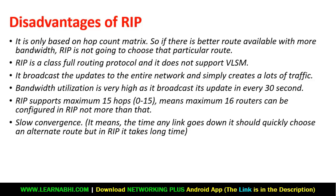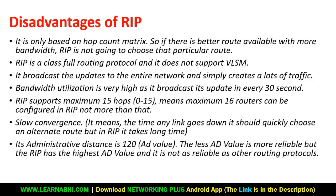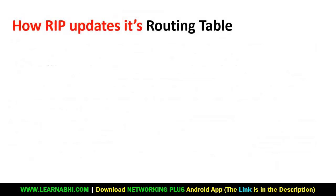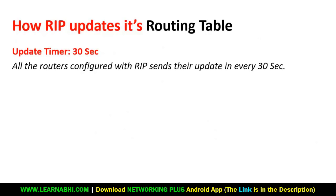The RIP administrative distance is 120, also called the AD value. A lower AD value means more reliability, but RIP has a high AD value and is not as reliable as other routing protocols. Now let's look at how RIP updates its routing table. The RIP update timer is 30 seconds — all routers configured with RIP send their updates every 30 seconds.